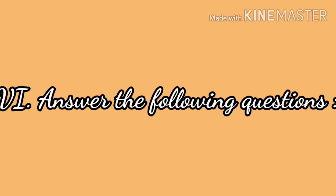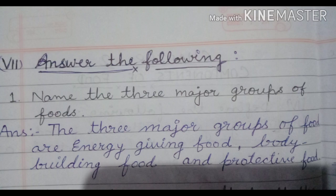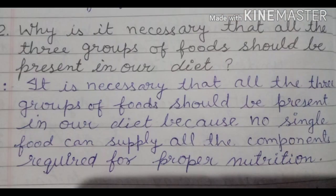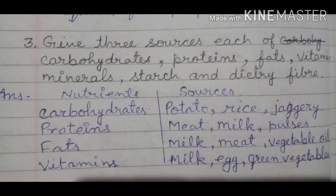Now seventh question: answer the following. First: name the three major groups of food. Answer: the three major groups of foods are energy giving food, body building food and protective food. Question number two: why is it necessary that all three groups of foods should be present in our diet? Answer: it is necessary because no single food can supply all the components required for proper nutrition.